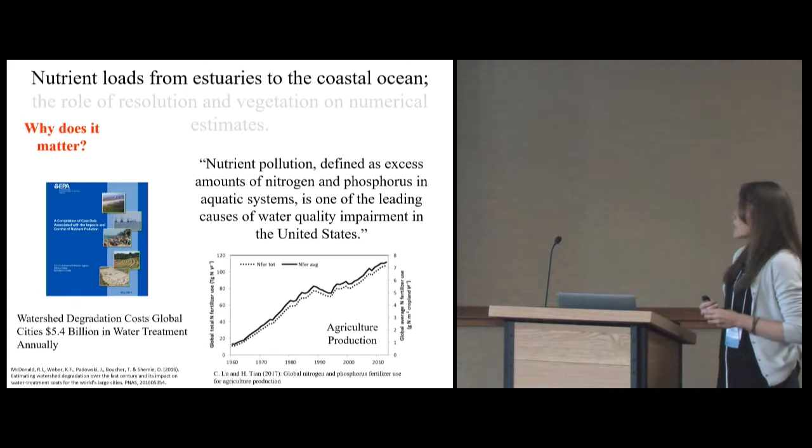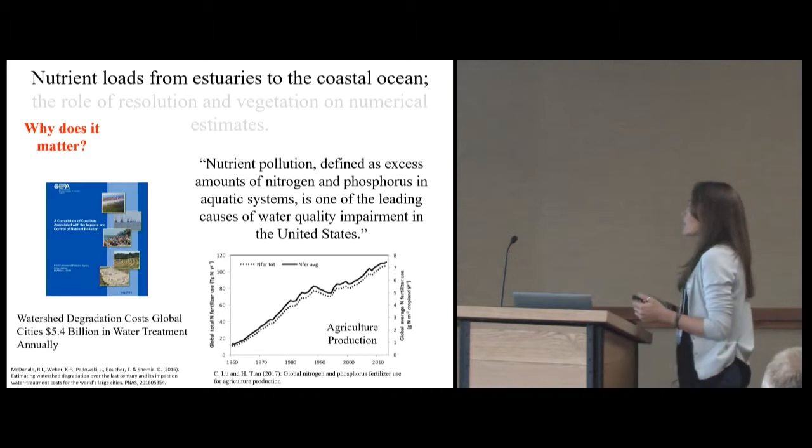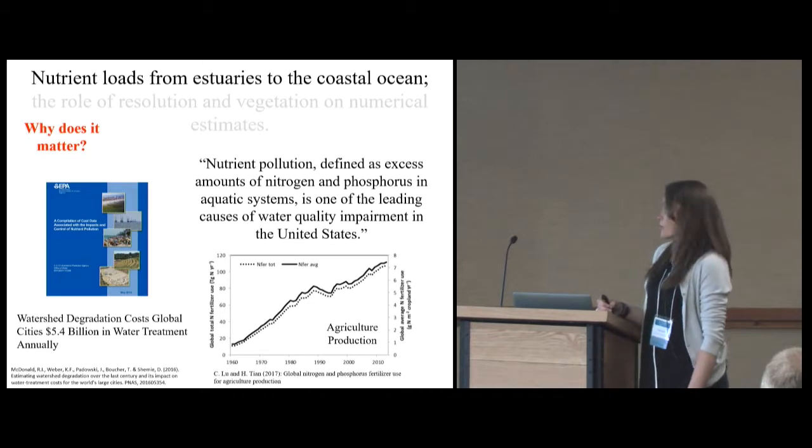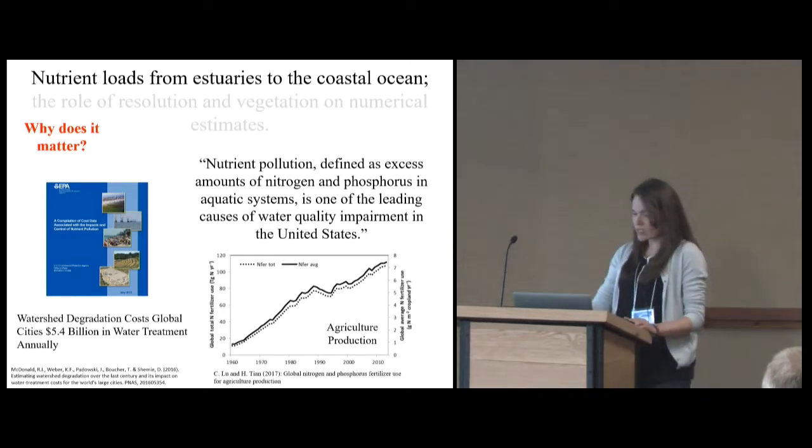Of the 32 largest cities in the world, 22 of them actually exist on estuaries. So what is the biggest threat to these systems? Nutrient pollution. In a 2015 EPA study on the cost of nutrient pollution in our economy, nutrient pollution, which is also called eutrophication, is defined as the excess amount of nitrogen and phosphorus in aquatic systems. It's one of the leading causes of water quality impairment in the United States. Watershed degradation costs global cities about five and a half billion dollars in water treatment costs annually. If we're looking at agricultural production and nitrogen in terms of fertilizer, really since World War II, the production of nitrogen has gone up steadily. We've been pumping synthetic fertilizer into our system for decades, and it's causing some really big problems.